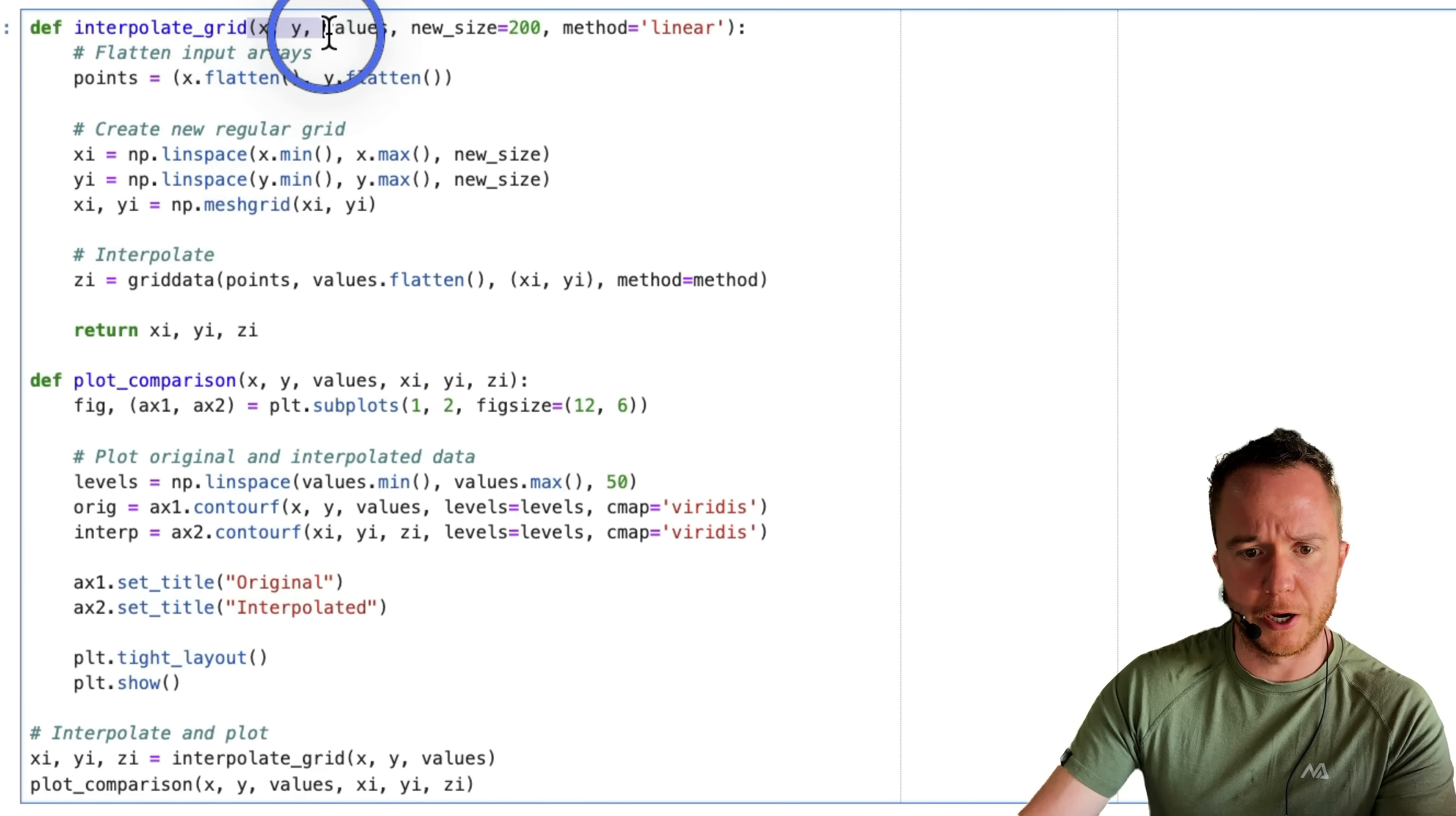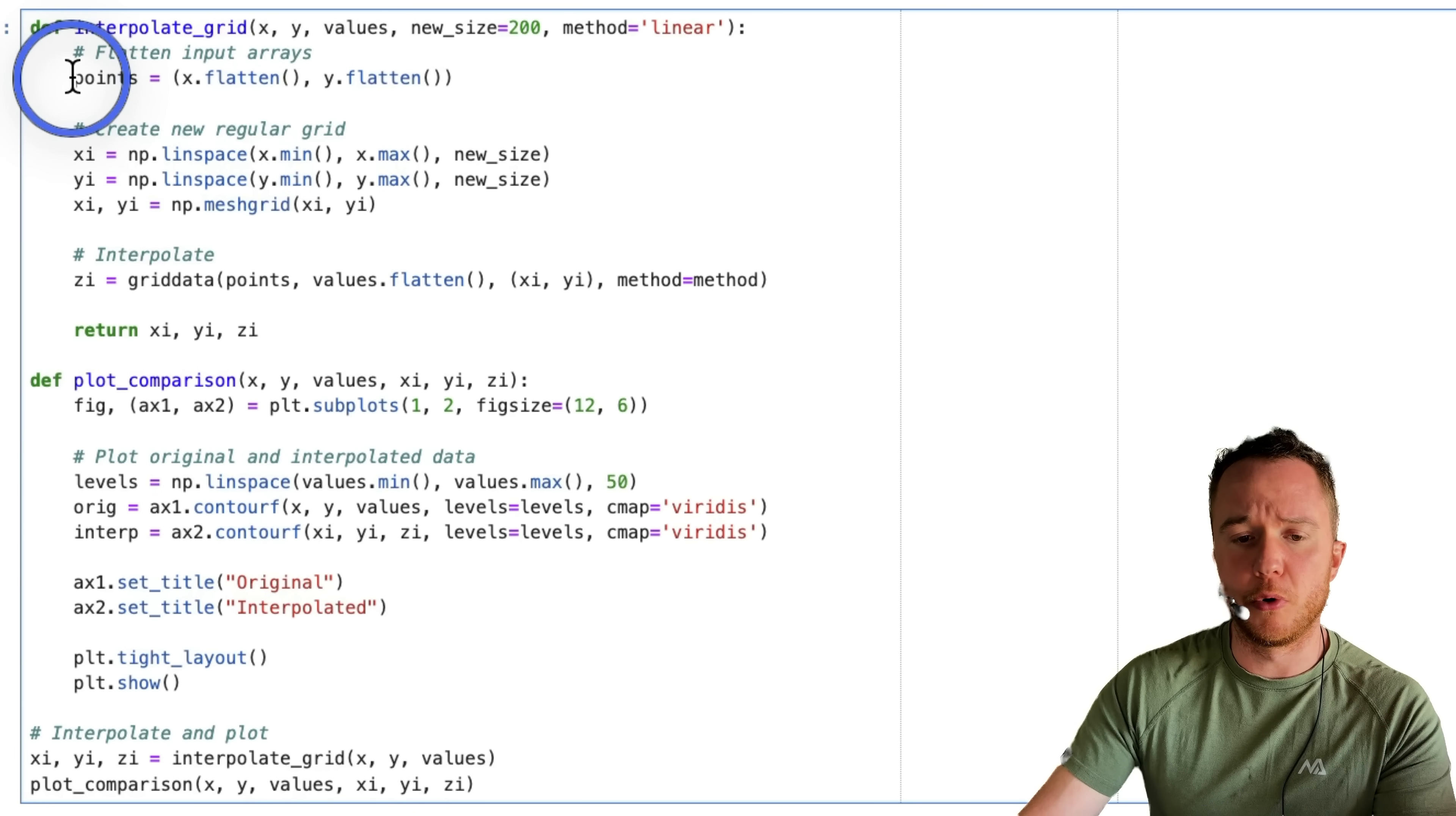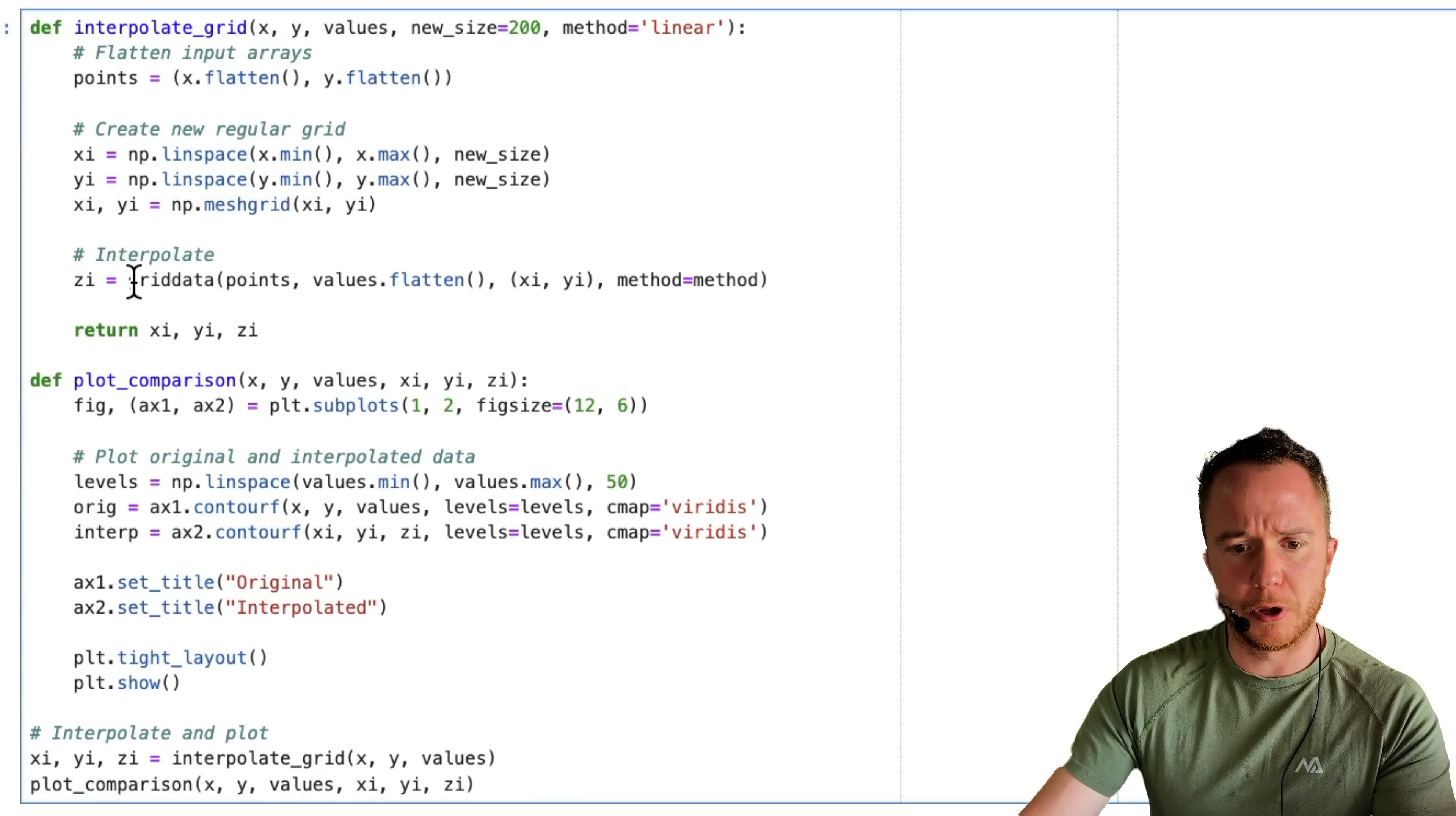the interpolation function, with x, y, and values as input arguments, the new size, now just as a single integer value, the method we can still choose. We create the points by flattening the x and y array, create the new regular grids with linspace as before, and interpolate. The entire code is a little shorter than it was before.